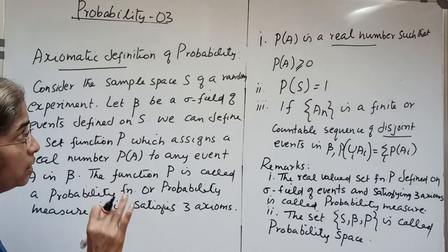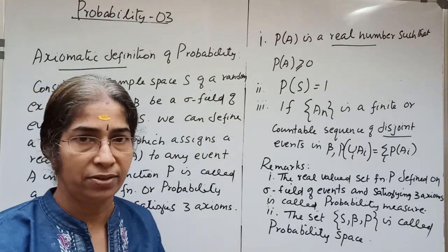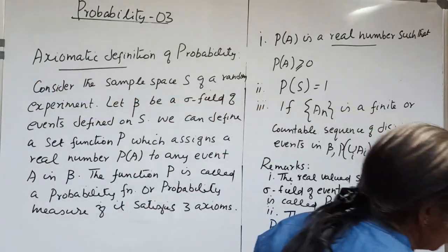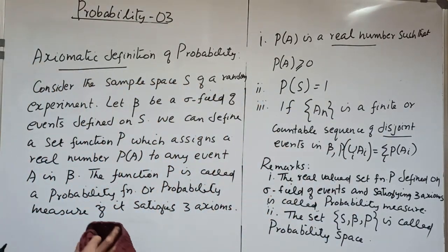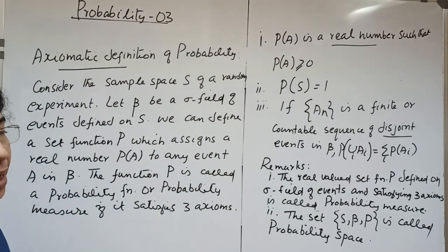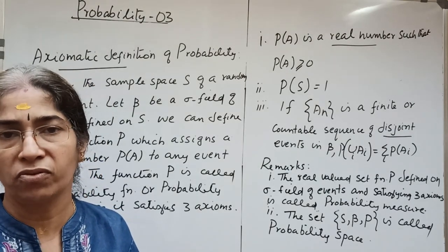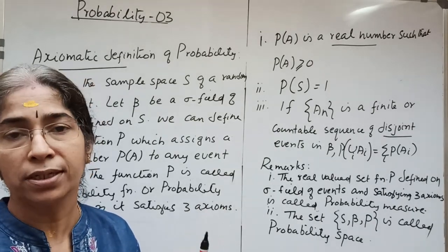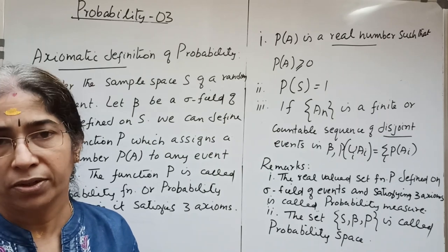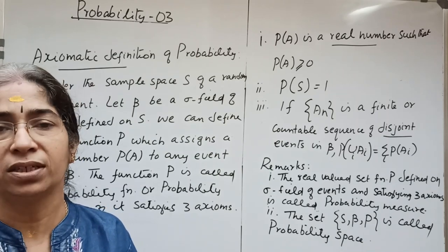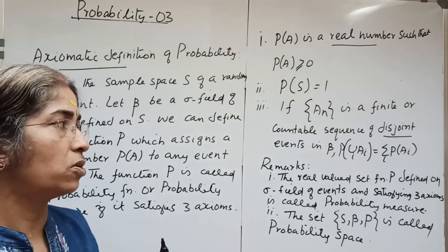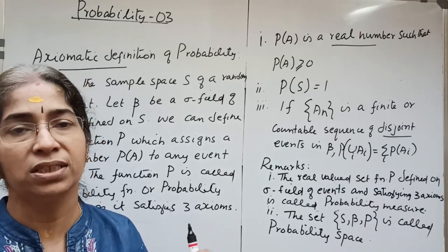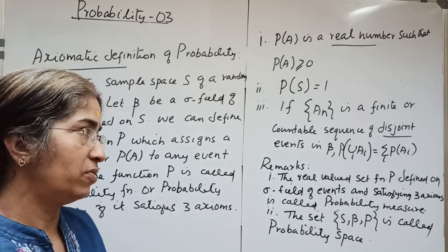We now have three definitions of probability: the classical definition, the statistical definition, and the axiomatic definition. These ensure that probability is a number lying between zero and one: 0 ≤ P(A) ≤ 1. If P(A) = 0 it is an impossible event; if P(A) = 1 it is a certain or sure event; if P(A) is between 0 and 1, it is an uncertain event.